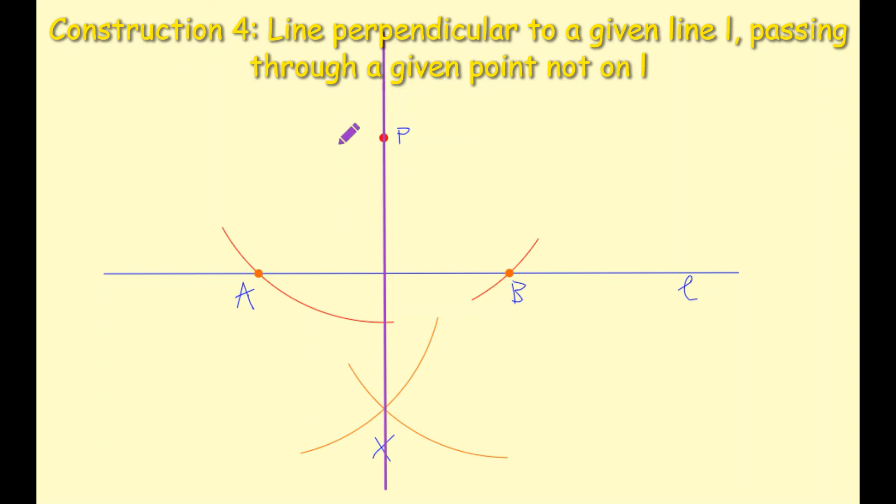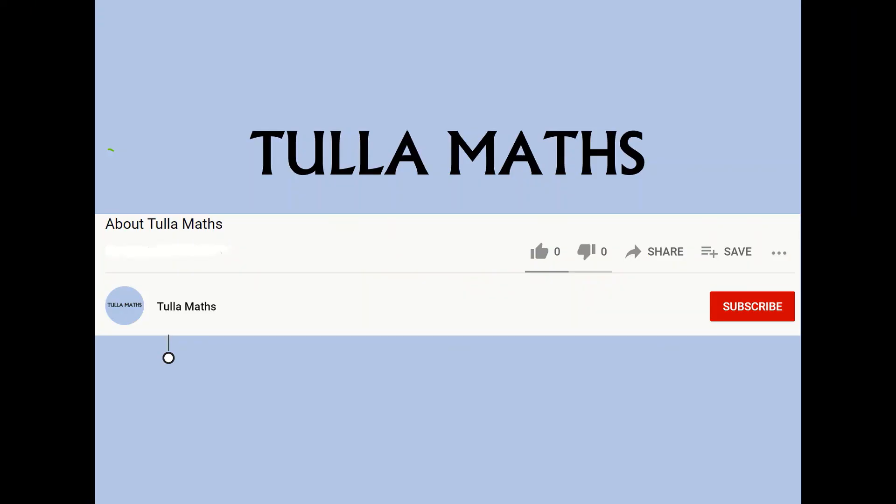Again just to denote your 90 degree angles here you can draw in your symbols for 90 degrees. And that is our construction for Construction 4. Thank you for watching another tutorial video from Tullamaths. Make sure and subscribe.